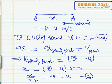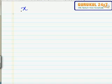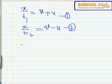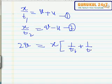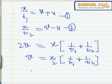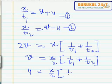We have x over t1 equals v plus u, and x over t2 equals v minus u. Adding these two equations eliminates u, giving 2v equals x times (1/t1 + 1/t2), so v equals x over 2 times (1/t1 + 1/t2). Similarly, we can find u to be x over 2 times (1/t1 minus 1/t2).